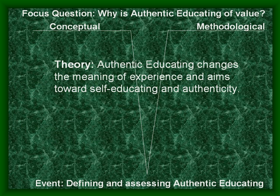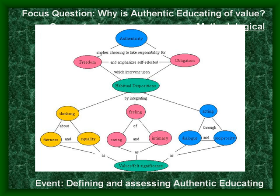The theory of authentic educating is that authentic educating changes the meaning of experience and aims towards self-educating and authenticity. Authenticity implies choosing to take responsibility for freedom and emphasizes self-selected obligation, which intervenes upon habitual dispositions — by integrating thinking about fairness and equality, by integrating feelings of caring and intimacy, and by integrating acting through dialogue and reciprocity as significant values.